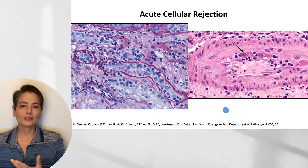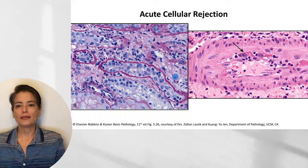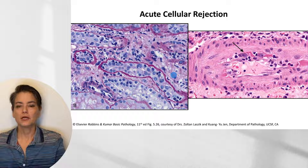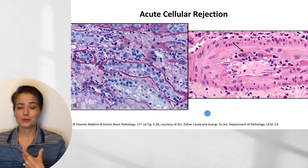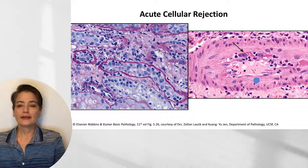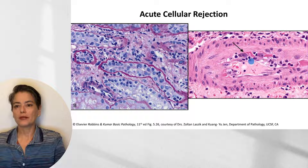Morphologically, acute cellular rejection can be tricky to diagnose — this is why we have renal pathologists. On a PAS stain, one can see a tubule with a thickened and wavy basement membrane that is under attack and collapsing, compared to a healthy tubule right next to it, along with increased cellularity due to inflammatory cells in the interstitium. In blood vessels, mononuclear cells separate the endothelial layer from the vessel wall, invading and attacking.